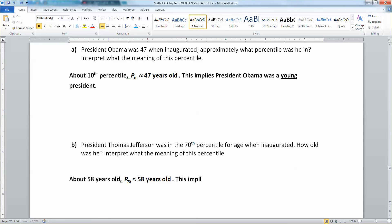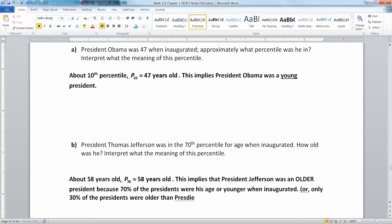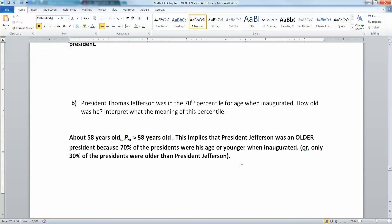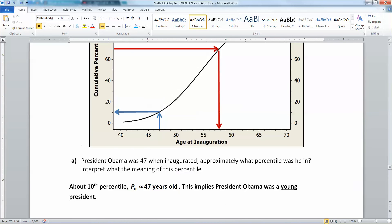This implies that President Jefferson was an older president. And there's two ways you can explain that. Because 70% of the presidents were his age or younger when inaugurated. Or put another way, or 30%, or only 30% of the presidents were older than him. So now we have looked at percentiles in a couple different ways and the very important percentile graph, and have looked at that. So I'll see you back here to talk about the interquartile range and measures of spread and outliers.